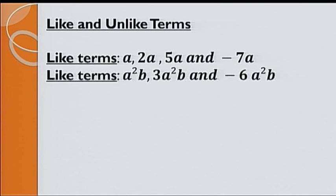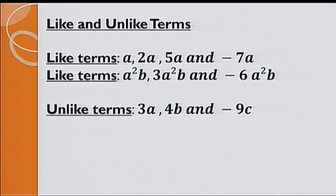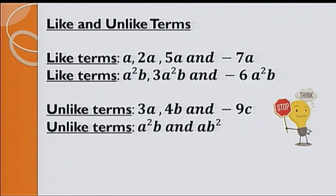For example, 3a, 4b and minus 9c are unlike terms. Another example of unlike terms: a squared b and minus 6ab squared. Now, let's stop and think about this question. Are 3ab and 5ba like or unlike terms?